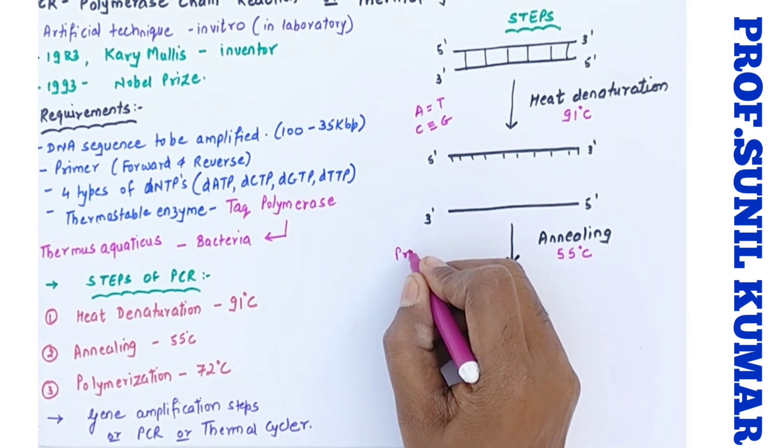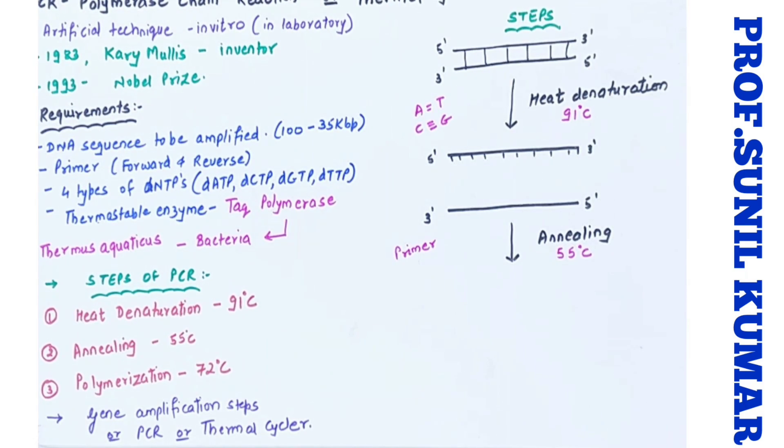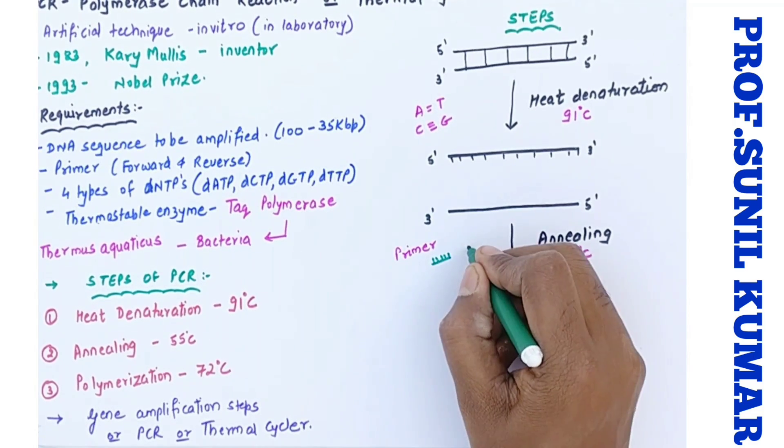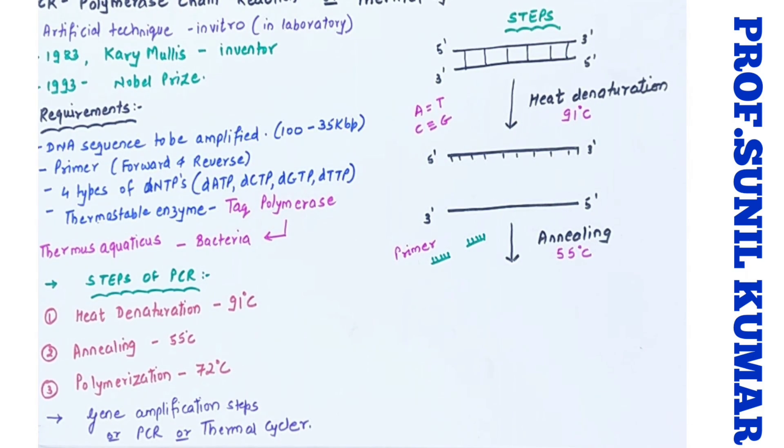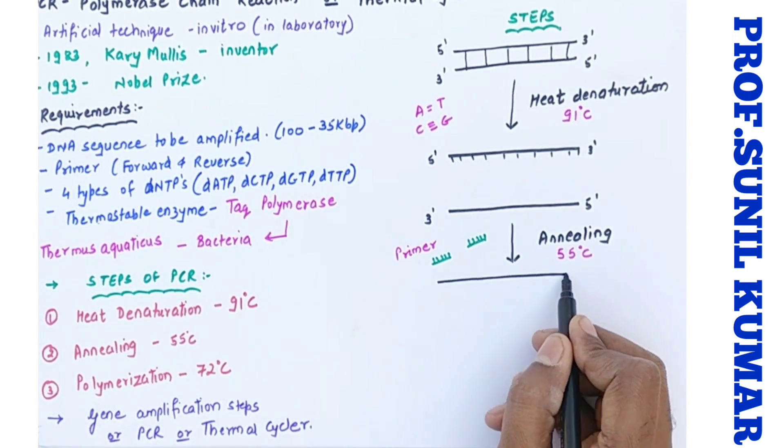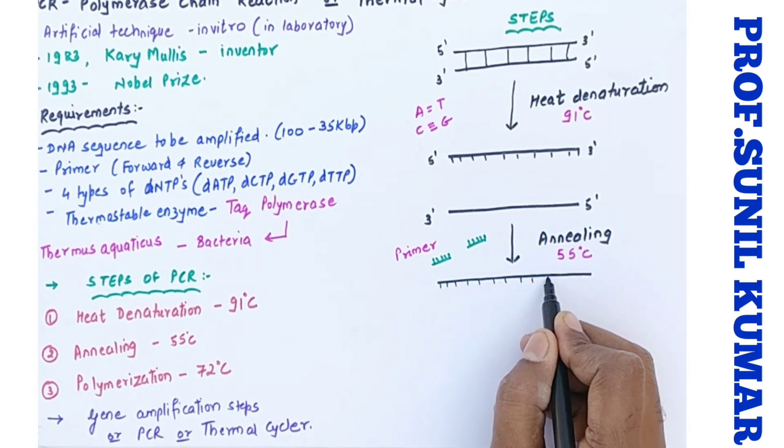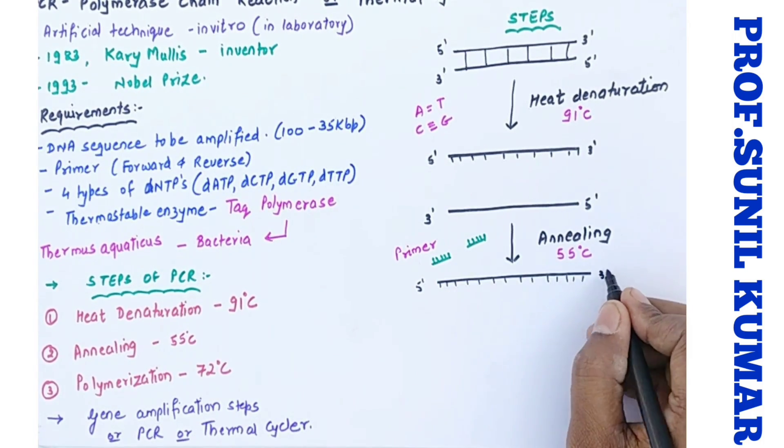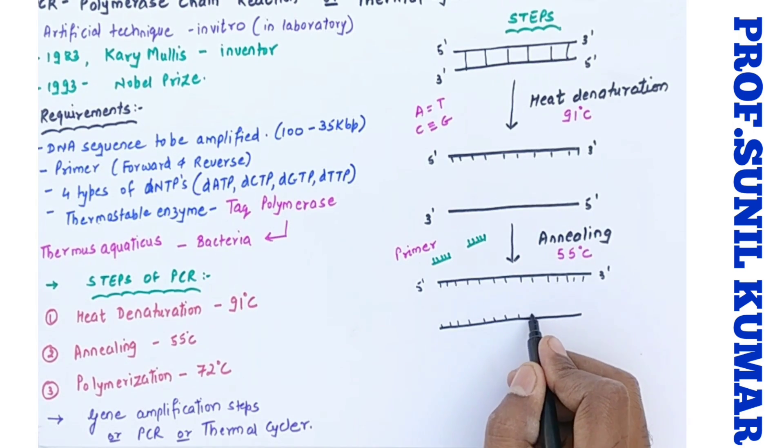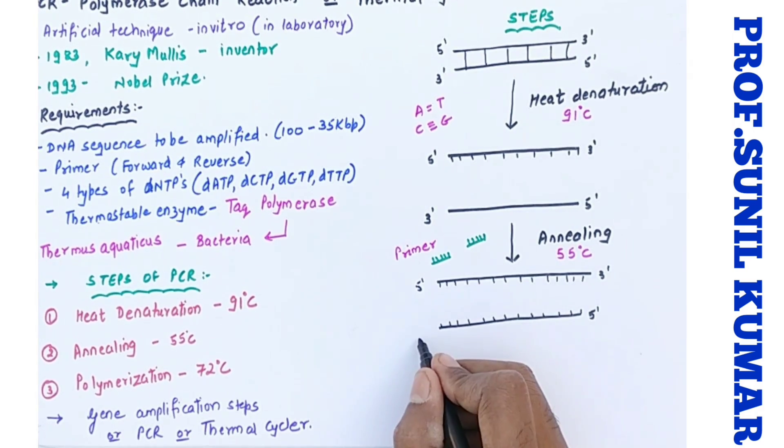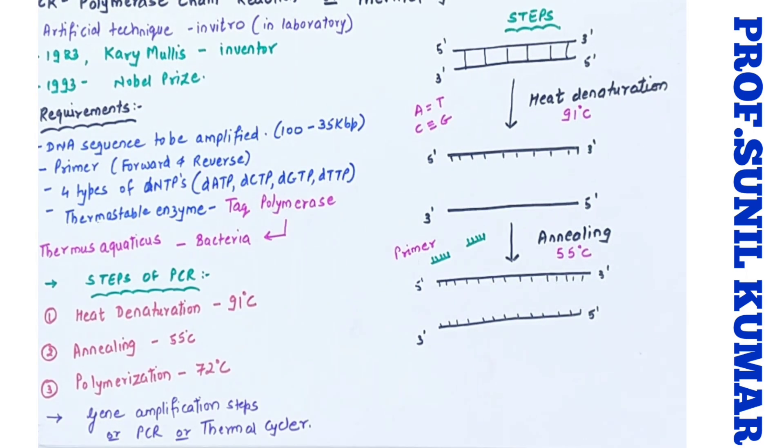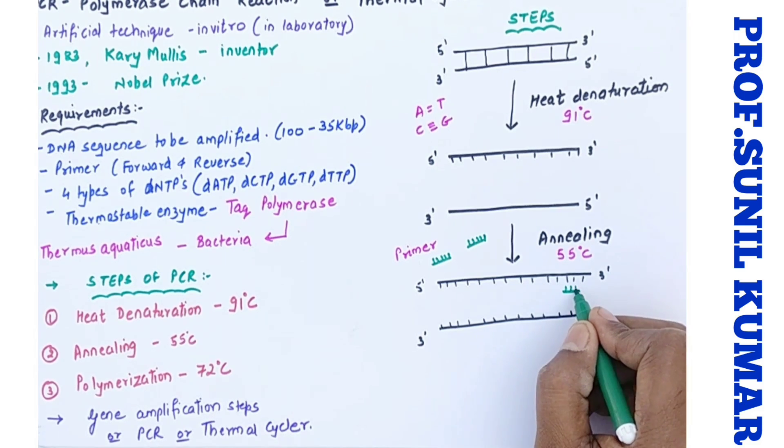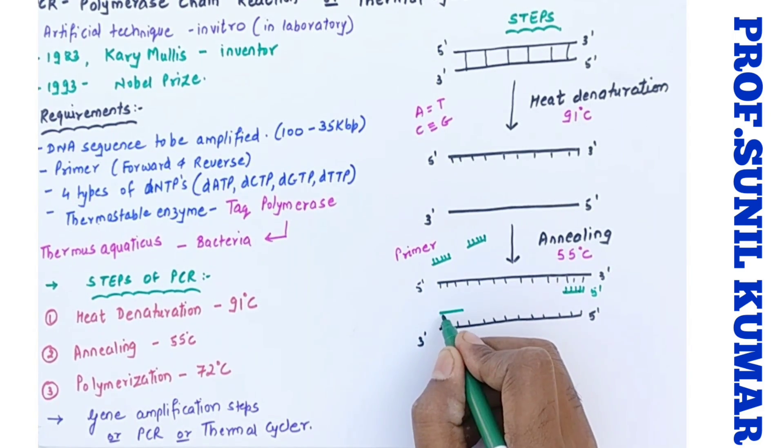And we move on to the next step that is annealing, which is in which the temperature is brought down to 55 degrees Celsius. We had a primer, there will be a forward primer as well as a backward primer. Now in this, the primer that we are using will be DNA primer. We cannot use RNA primer as per DNA replication. In this we are using DNA primer. Now the biggest role, the primer is going to attach at three prime end.